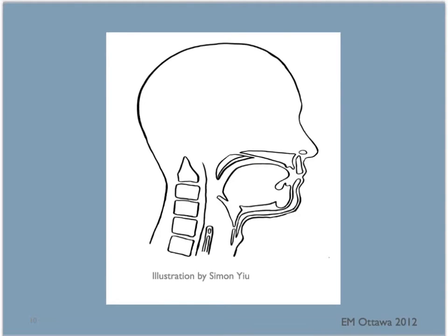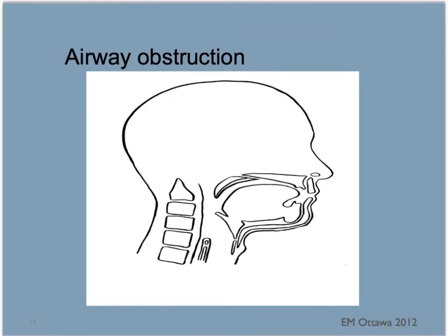Let us look at a cross-section of the upper airway. The tongue is here. The trachea is anterior to the esophagus. In a patent airway, air flows from the nasal pharynx and oral pharynx into the trachea. Any secretions — including blood and vomit — can pool in the oral and nasal pharynx and further down the trachea, causing an obstruction.